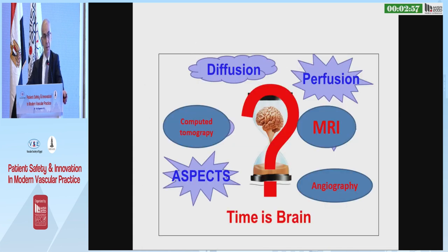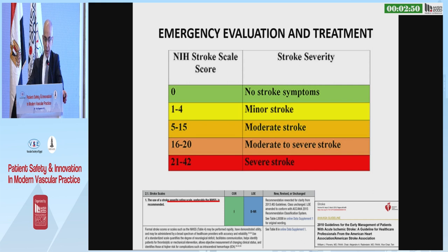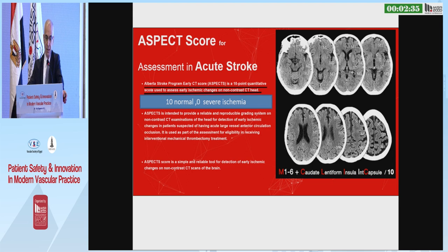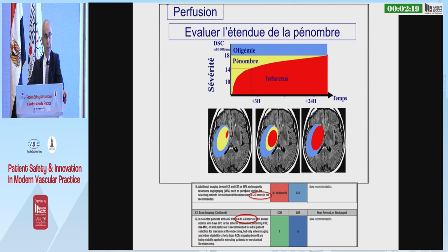Which examination? This is the domain of the interventional neuroradiologist. Every stroke should be classified using the NIHSS (National Institutes of Health Stroke Scale). Major or moderate stroke is an indication for mechanical thrombectomy. The ASPECTS (Alberta Stroke Program Early CT Score), a 10-point CT score, is used to assess early ischemic changes on non-contrast CT. Perfusion imaging is useful 6 hours after stroke to evaluate penumbra, oligemia, and infarction zone.